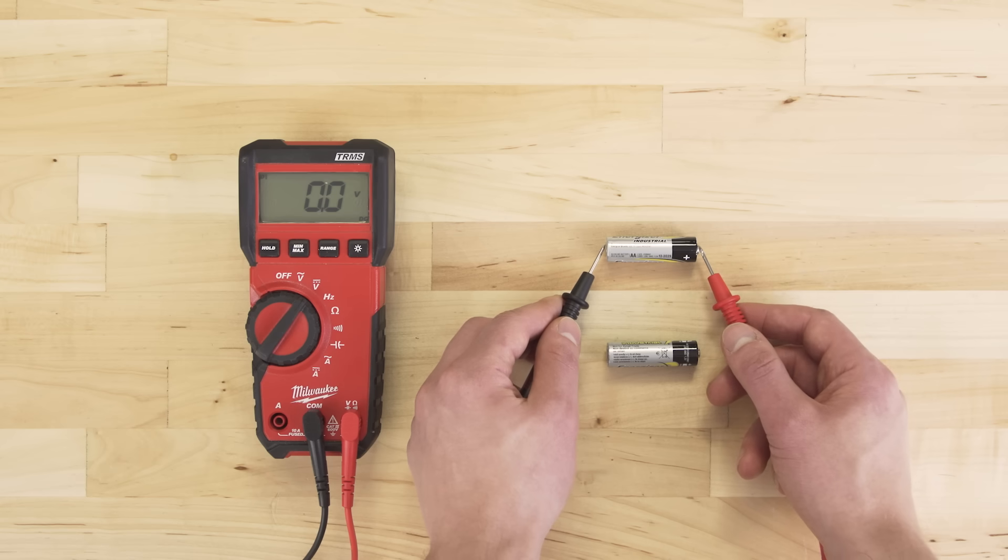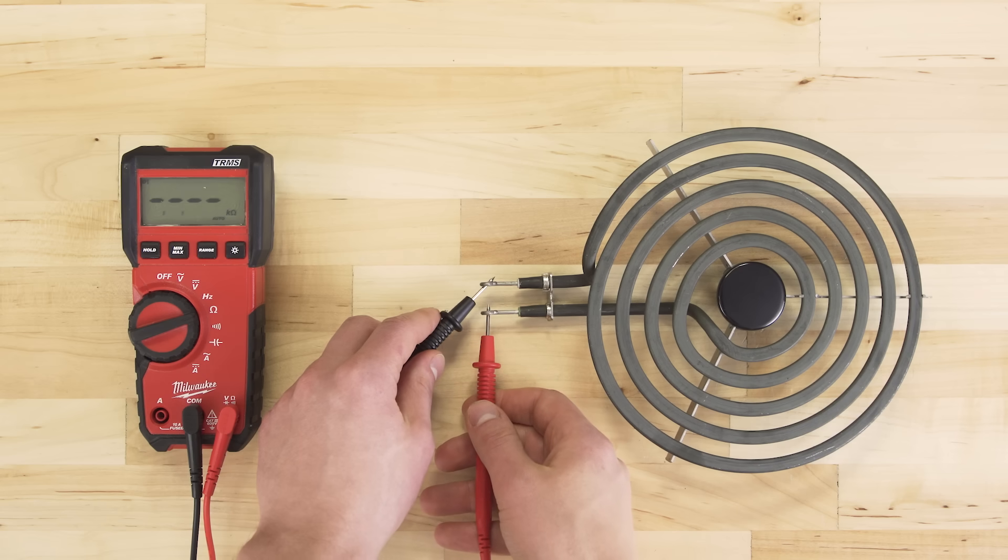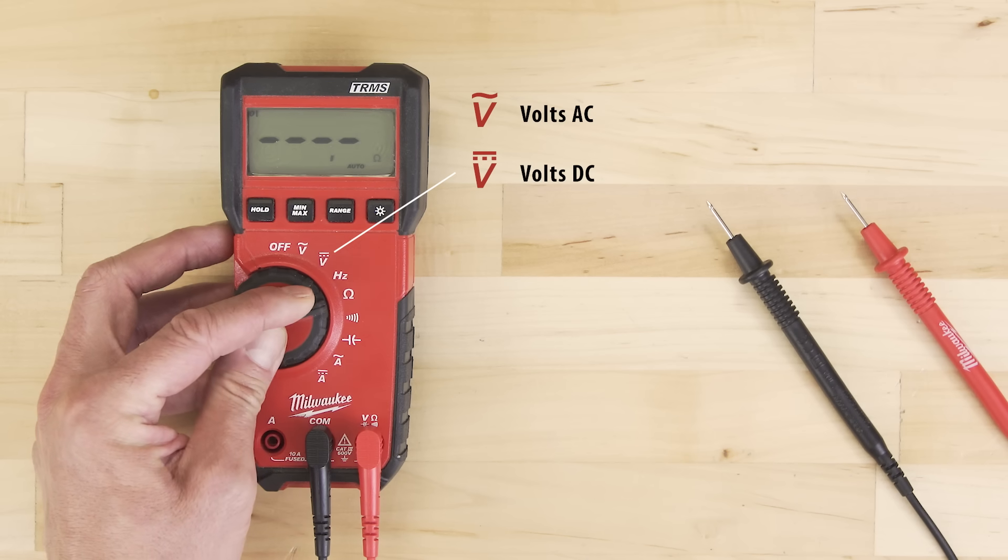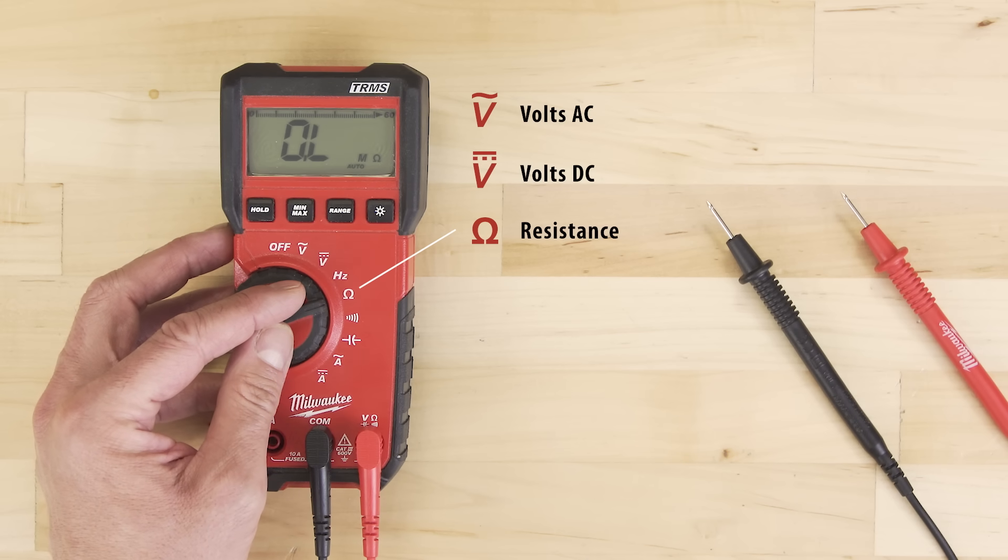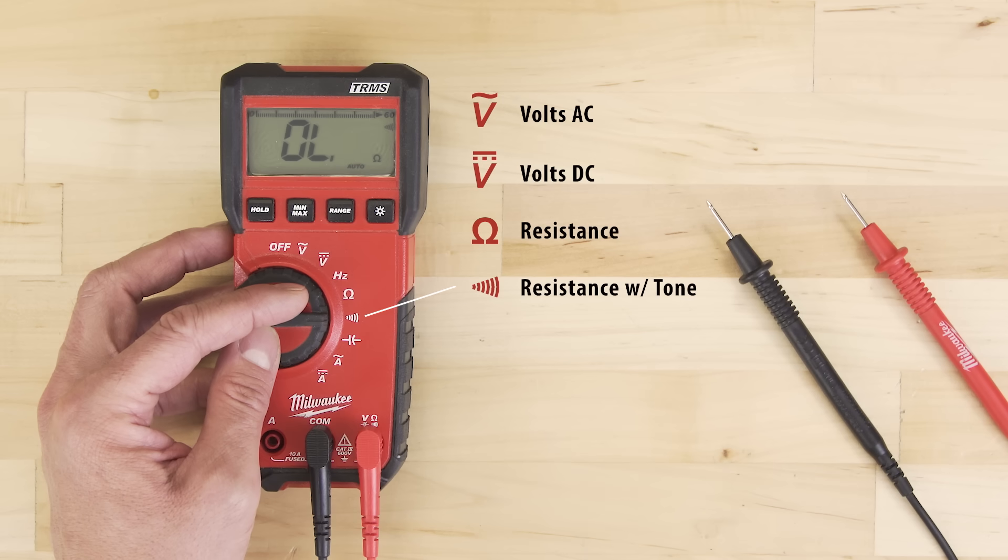Multimeters are an essential tool for testing electrical circuits and components. Whether it's checking a battery, extension cord, or troubleshooting an appliance, multimeters can help determine exactly what has failed. If you've never used a digital multimeter, or if you're looking to refresh your knowledge, then this episode will get you started.